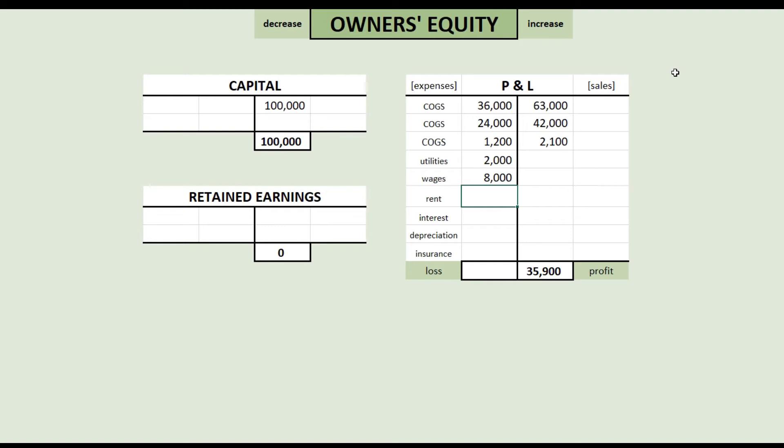Just like we did for the utilities, we book wages as an expense. We book our revenue and expenses in our P&L account. And that's how we account for that transaction.